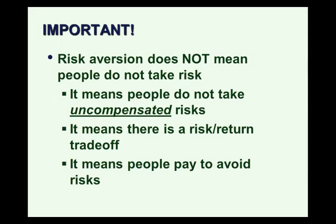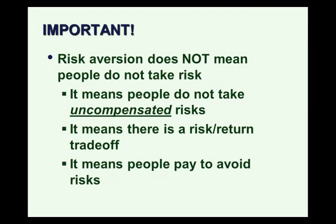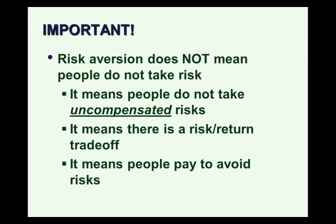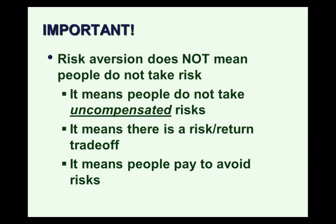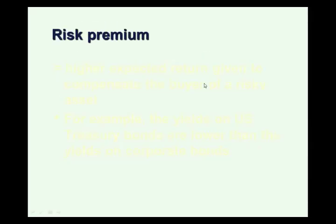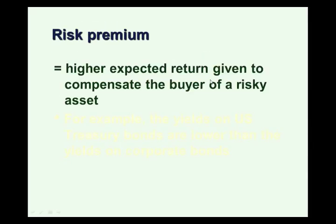Risk aversion also means that people pay to avoid risks — that's the whole idea of insurance. For example, property or renter's insurance means that people pay a premium to avoid the financial risk of losing their possessions suddenly in a fire, theft, or some other incident. People pay to avoid certain risks because we're risk averse, and we're better off if we can get someone else to bear that risk depending on the price. We call the higher expected return that compensates the buyer for taking the risk a risk premium — risk requires compensation.